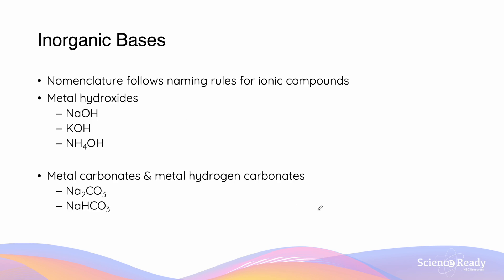For inorganic bases, the nomenclature follows the naming conventions for ionic compounds. For metal hydroxides like NaOH, this is called sodium hydroxide, potassium hydroxide, and ammonium hydroxide. For metal carbonates and metal hydrogen carbonates, this is called sodium carbonate and sodium hydrogen carbonate. If you are unfamiliar with the naming conventions and nomenclature for ionic compounds, you can revise them by watching the nomenclature section of our compounds video.